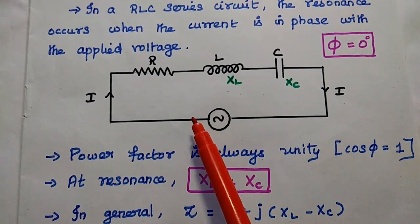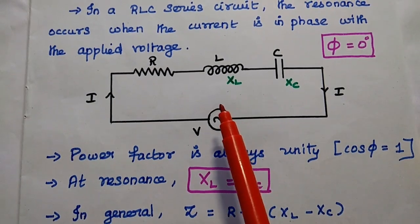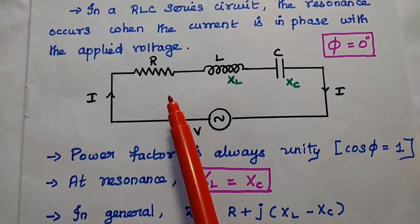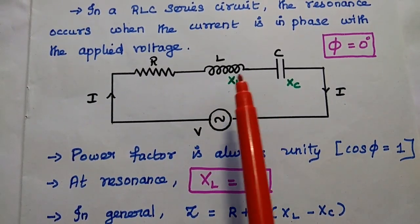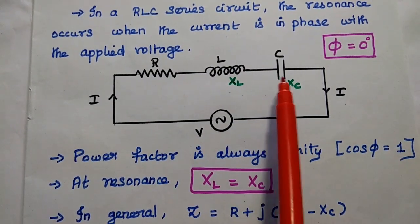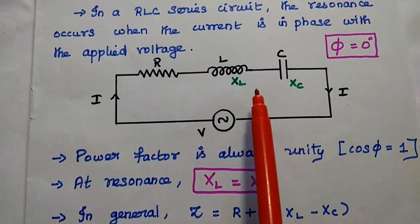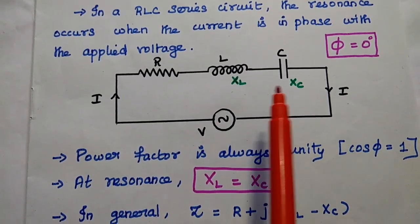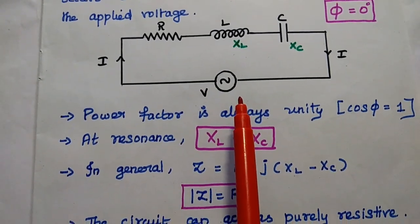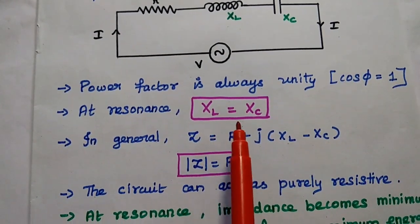At resonance condition, the circuit acts as a resistive circuit because voltage and current are both in phase. At that time, the inductor has inductive reactance and the capacitor has capacitive reactance, and these two reactance values are equal — so both cancel each other. Then the circuit acts as a resistive one. At resonance condition, XL is equal to XC.